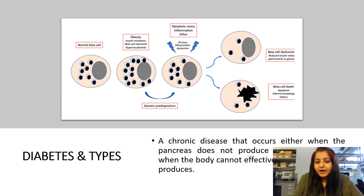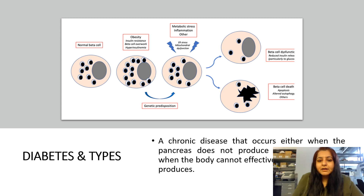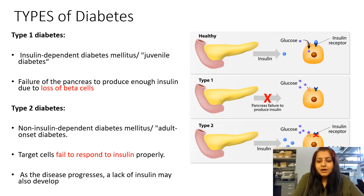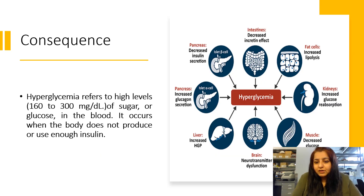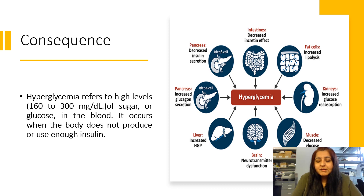As a result, there is a higher level of glucose in the blood. When there is a higher level of glucose present in the blood, this condition is called hyperglycemia.